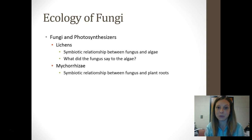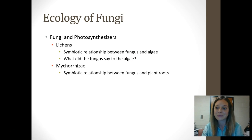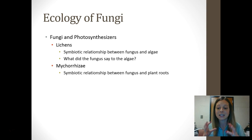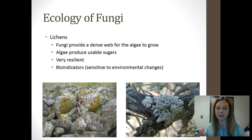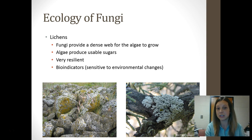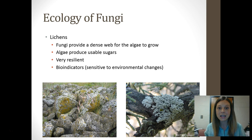Some examples of symbiotic relationships with fungi are lichens and mycorrhizae. Lichens are actually not their own organism — it's two organisms living symbiotically: a fungus and an alga. It's mutualistic, so both are getting something. The fungi provide a place for the algae to grow, and the algae — being plant-like protists — photosynthesize and make sugar, which is then given to the fungi. These are very resilient organisms that can grow almost anywhere, making them really good bioindicators. If lichens are growing well, the environment is healthy; if lichens can't grow, the environment is not doing well.